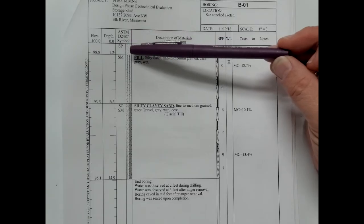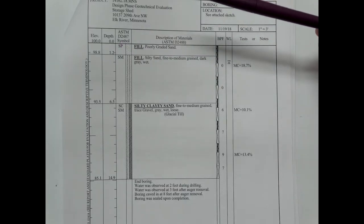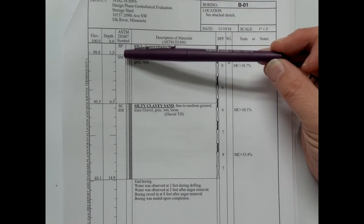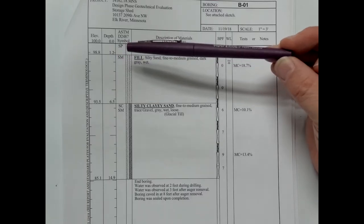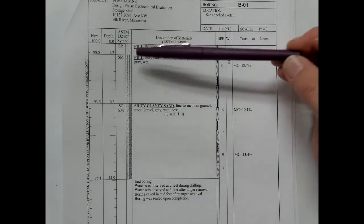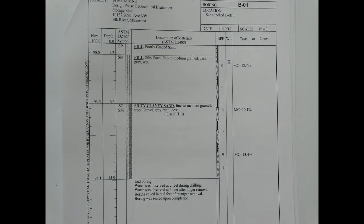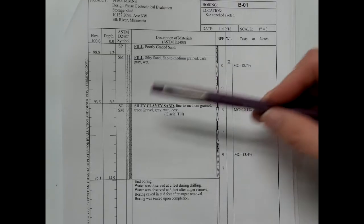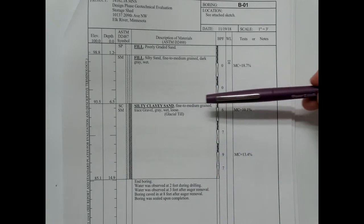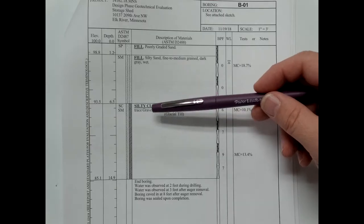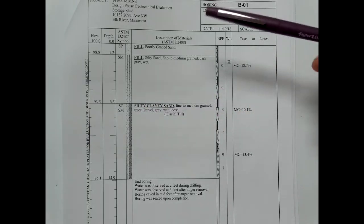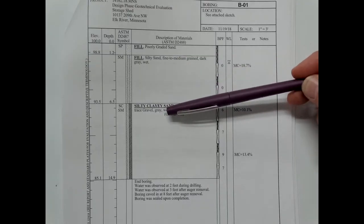The first 1.2 feet is sand, poorly graded. From about 1.2 feet down to 6.5 feet we have a silty sand of medium plasticity. From 6.5 feet to the end of the boring there is fine to medium grained silty clay sand — sand with silt and clay in it, a trace of gravel, it's gray, it's wet, and it's loose.